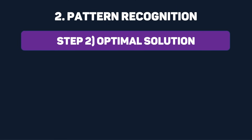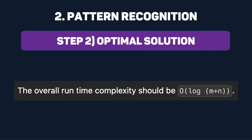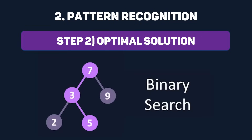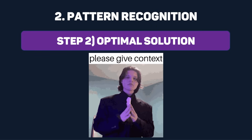The second step is to find our optimal solution — we need to identify the data structure and algorithm we should be using. First, check to see if the problem provides any constraints, as this can give away what you should be using. For example, if a problem has a time complexity of O(log n), there is one specific algorithm that accomplishes this: binary search. If there's no obvious hint in the problem, you'll need to use the context of the problem to identify the pattern.